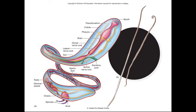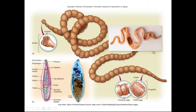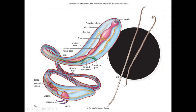Here we can see a non-segmented helminth, and its smooth nature lets us know that this is going to be a roundworm. Unlike the segmented worms where each individual segment contains most of the structures needed or is capable of repopulating a host, for the roundworms, when they go through reproduction, they typically need to transmit an entirely new worm to the host.